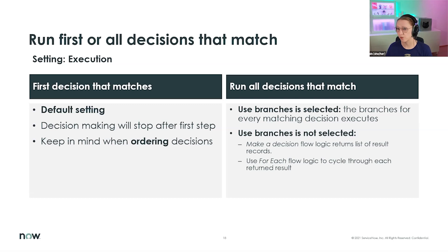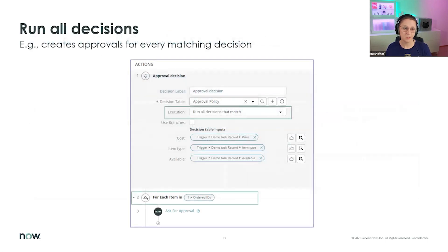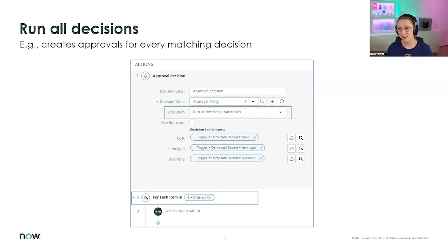If you want to run flow actions for all matching results, each branch will be executed. If you uncheck the 'Use Branches' option, you get access to a record list of results and can iterate this list with for-each logic. The output of the decision gives you an ordered list that you can pull into a for-each item and iterate through, using the data pills as needed.